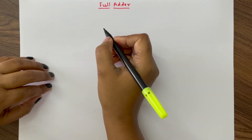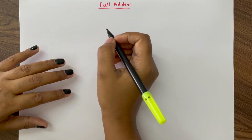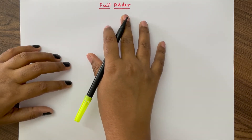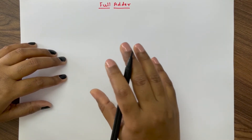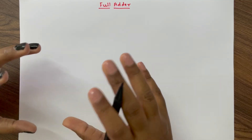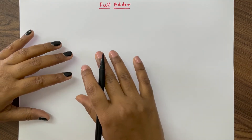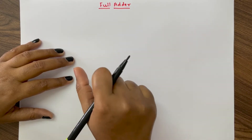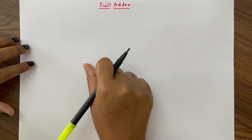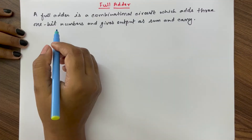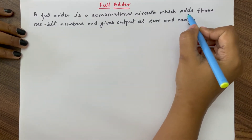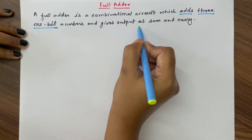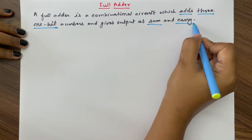Hello friends, welcome to our YouTube channel RF Design Basics. Today in this lecture we are going to study about full adders. We will cover what is a full adder, what is the logic circuit inside the full adder, and how to design a full adder using two half adders. A full adder is a combinational circuit which adds three one-bit numbers and gives output as sum and carry.